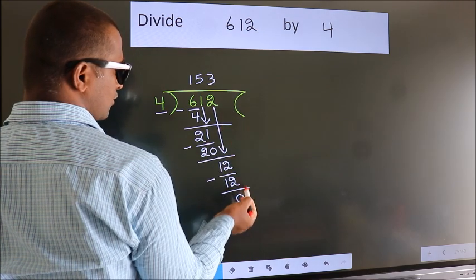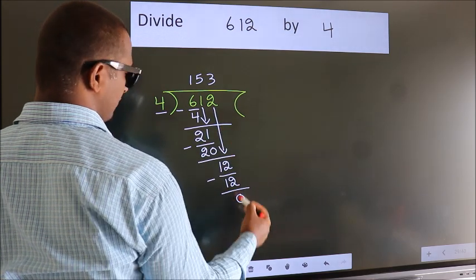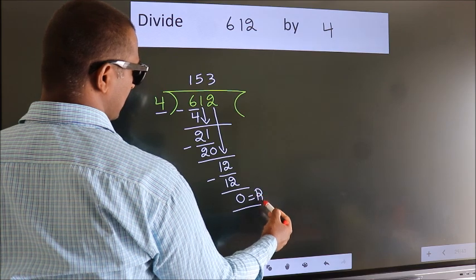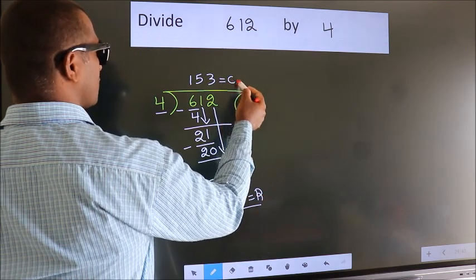No more numbers to bring it down. So we stop here. This is our remainder. This is our quotient.